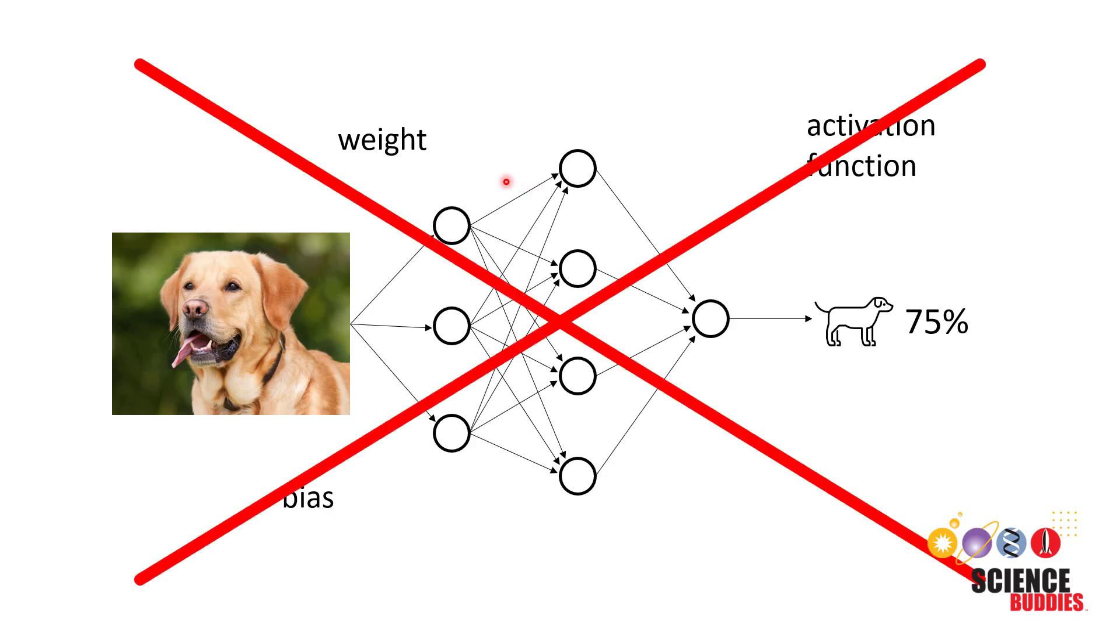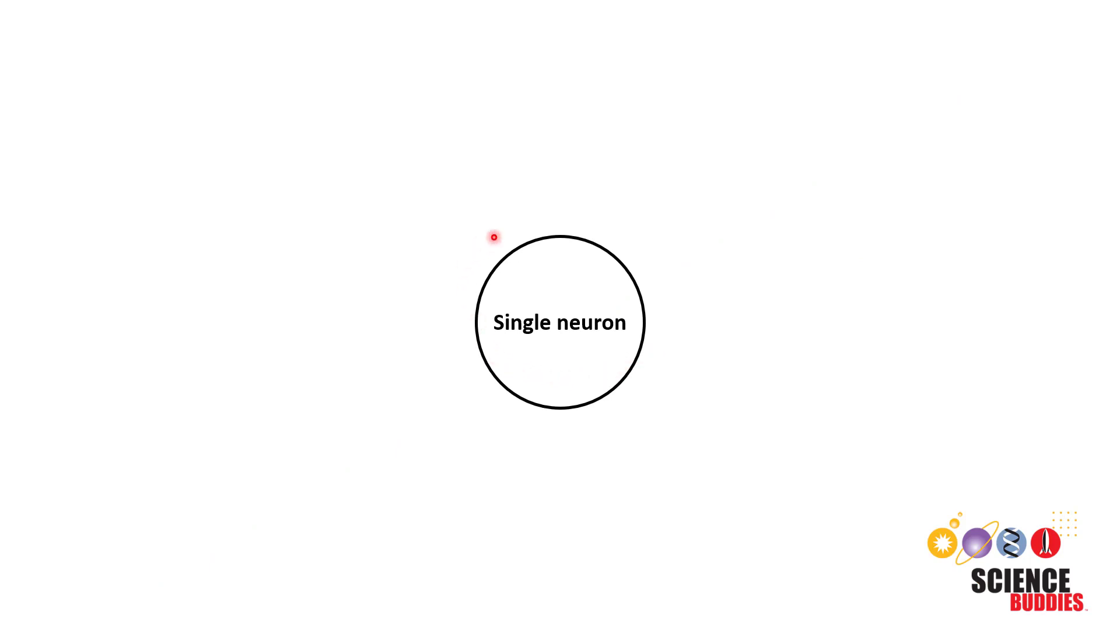So that is not what we are going to do in this video. Instead, we're going to look at an example of a simple network that only contains a single neuron with a handful of inputs. This forms the basic building block of the more complex network you saw on the previous slide. This example will have a single binary output, meaning it can be either 1 or 0. This type of simple network with a single binary output is called a perceptron.